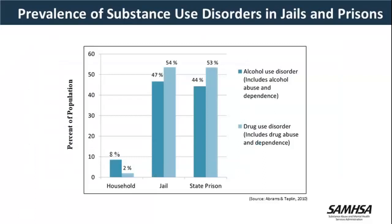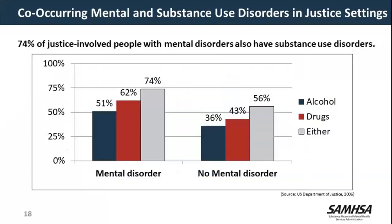For substance use disorders, over half of persons housed in jails and prisons have either an alcohol or a drug use disorder, and many have poly drug use — that's really the standard. Rates are up to 25 times higher than the general population. Yet with both mental health and substance use services in correctional settings, there's a significant gap — fewer than 10% of those needing intensive drug treatment services actually receive those services in jails or prisons.